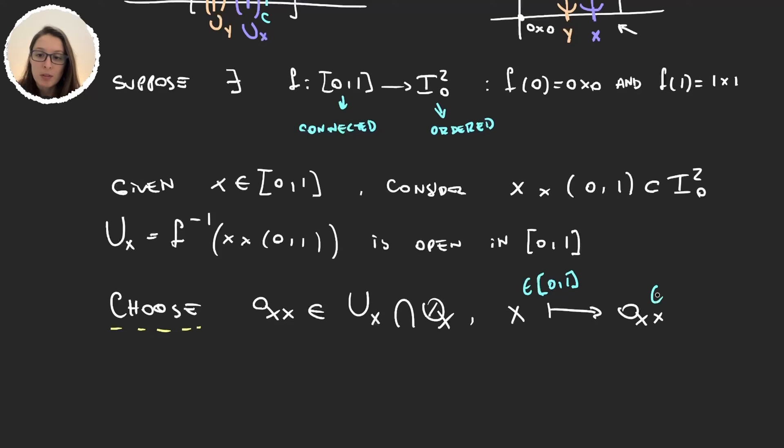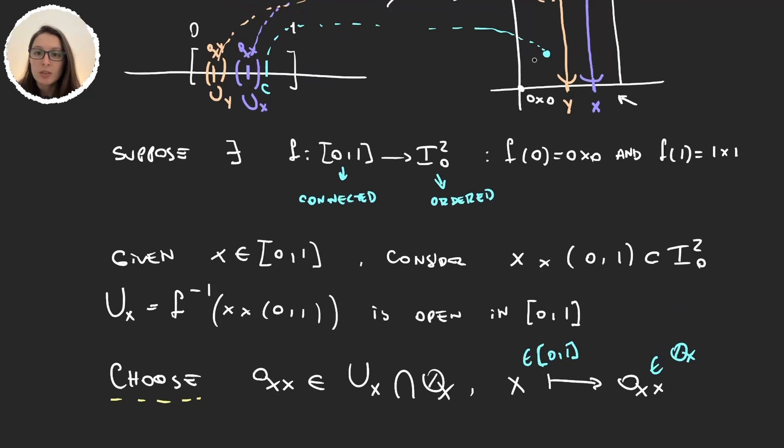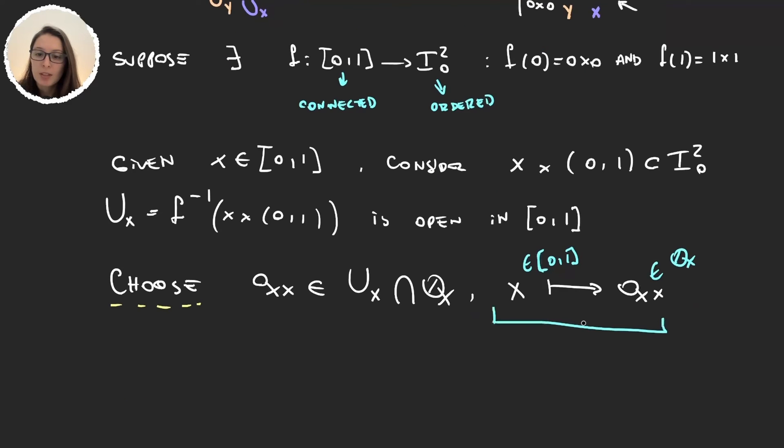And this number well this is a rational number so it's in Q and this function is injective because I'm taking the x and then for each x in [0,1] I'm having q_x and given that all these intervals will be disjoint then all these rational numbers will be different and so that makes this function injective.